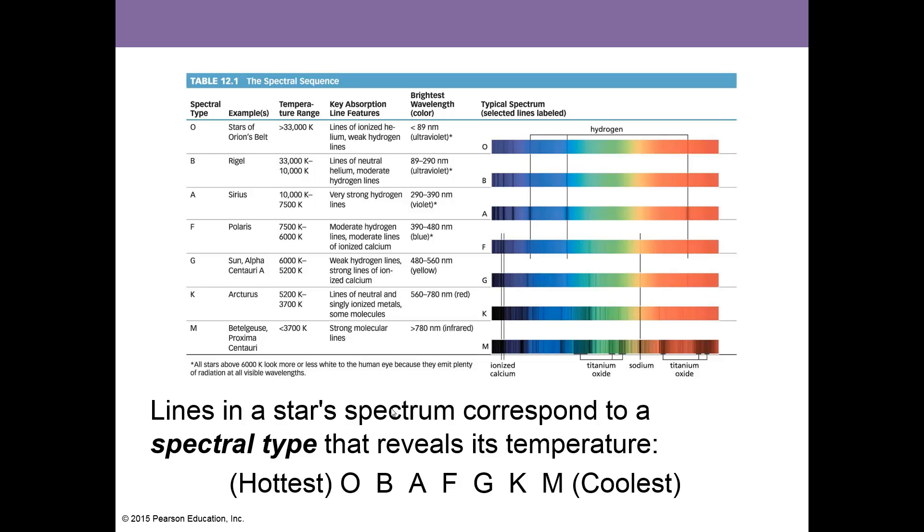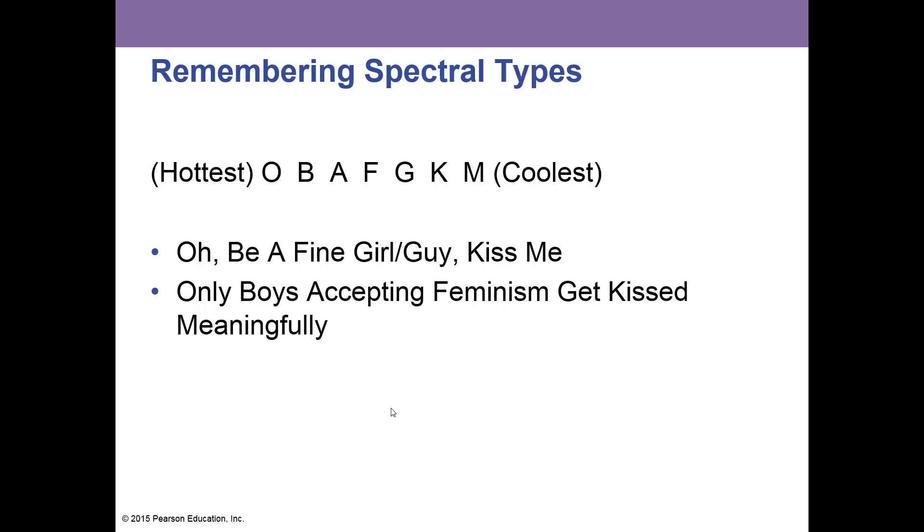These are the seven categories that we put stars into. The hottest stars begin with an O, goes down to O, B, A, F, G, K, and M are the coolest stars. You will need to memorize this, but we have a cool way to do that with this mnemonic phrase: 'O, be a fine girl or guy, kiss me.' That's pretty simple. If you know that, you've got the whole thing down.